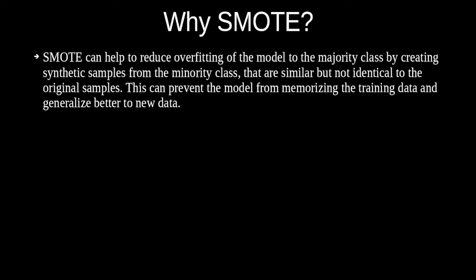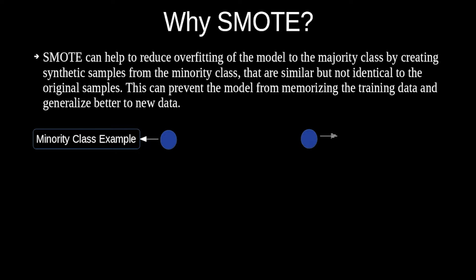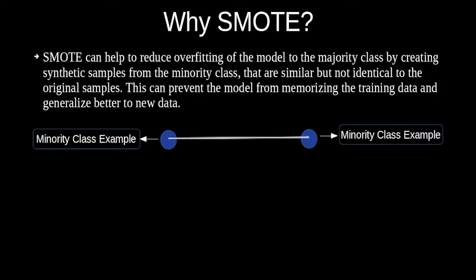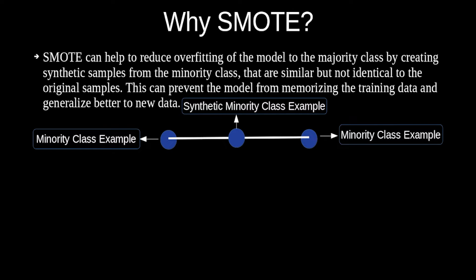But how are these synthetic examples generated using minority class examples? Consider one minority class example and a second minority class example. We generate a new synthetic example by interpolating these two minority class examples, resulting in a new synthetic minority class data point.